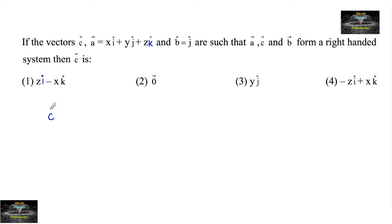If the vector a is given as x i plus y j plus z k and vector b is equal to unit vector j such that a, c, and b form a right-handed system.